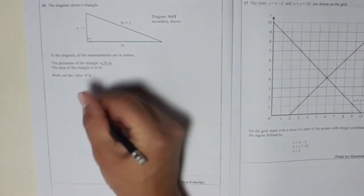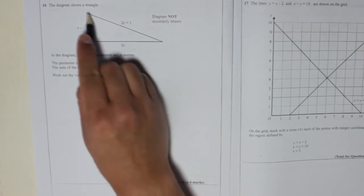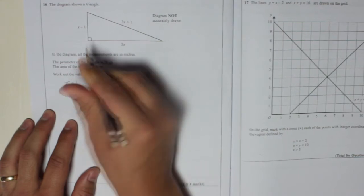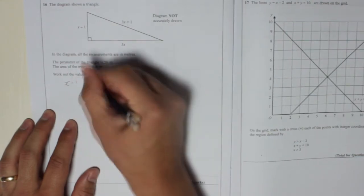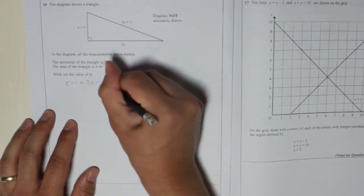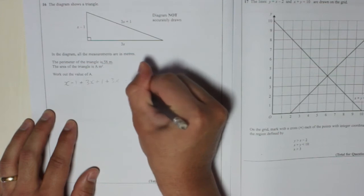That means that the distance all the way around the triangle is 56. So that means that x minus 1, that part, plus 3x plus 1, that part, plus 3x is equal to 56.